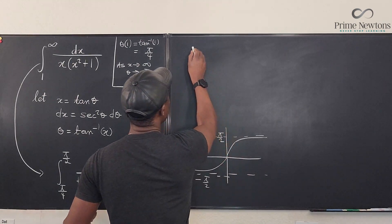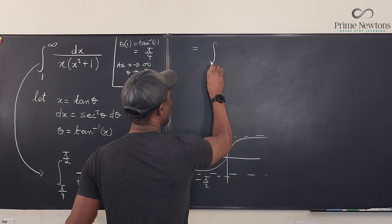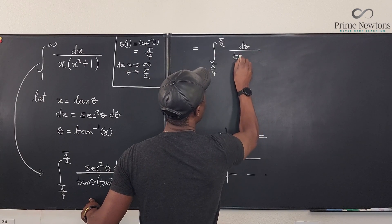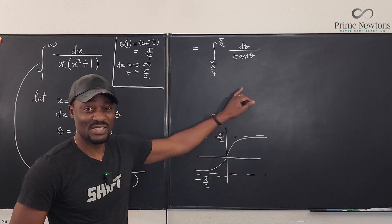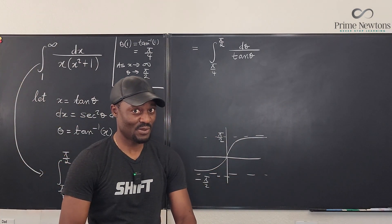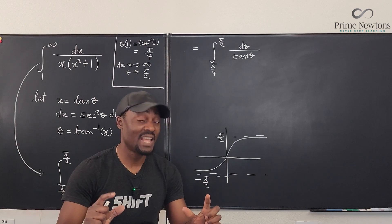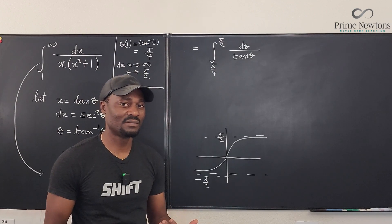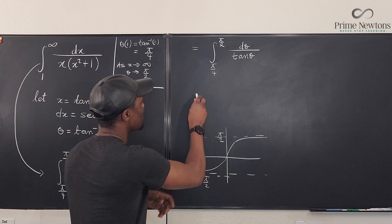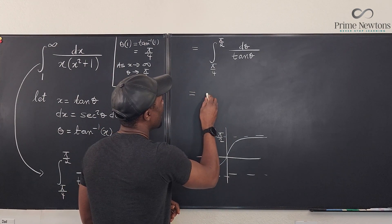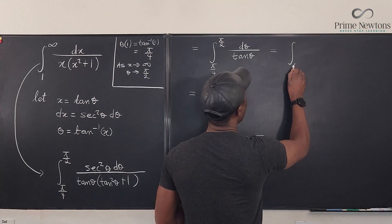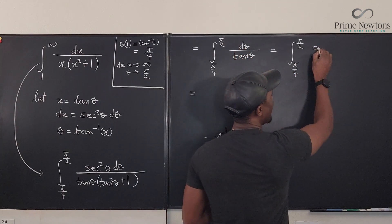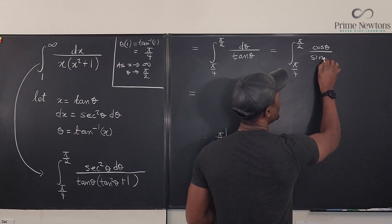So we can go here and say this is equal to the integral from π over four to π over two of dθ over tan θ. This is sweet, because every calculus student in the world knows the integral of one over tan θ is the natural log of sin θ. We can write this as the integral from π over four to π over two of 1 over tan θ is the same thing as cos θ over sin θ.